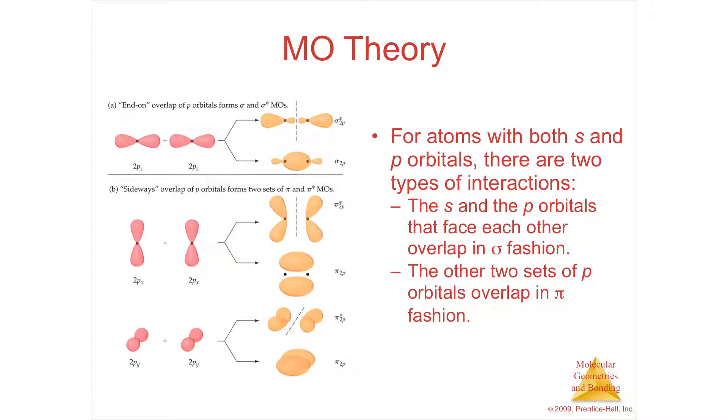Section 9.8, second row diatomic molecules. We've looked at molecular orbital theory with sigma s's, but now we have to be able to turn pi atomic orbitals into molecular orbitals.